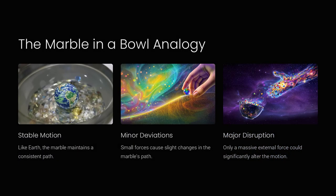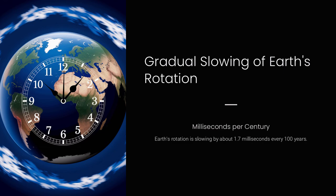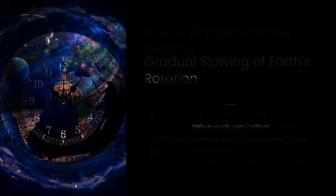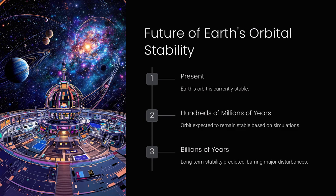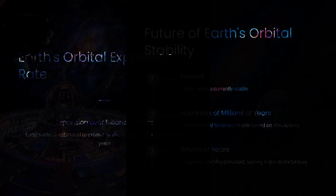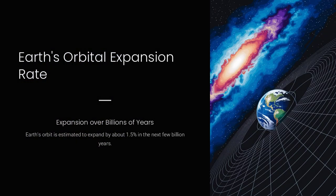At the same time, Earth spins on its axis, creating our 24-hour day-night cycle. This spin is a leftover effect from when the planet formed, and due to the conservation of angular momentum, it continues unless acted upon by external forces.